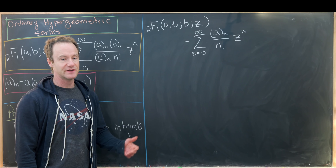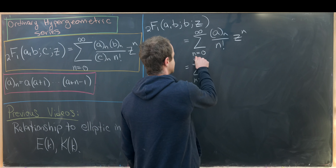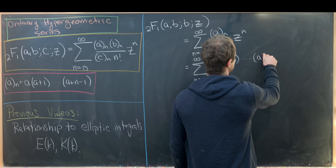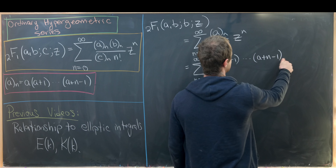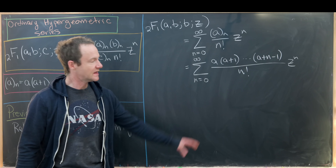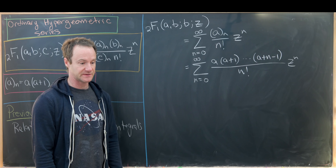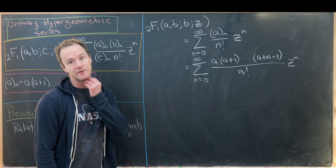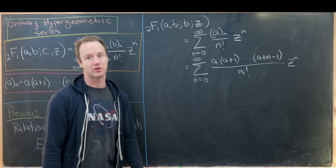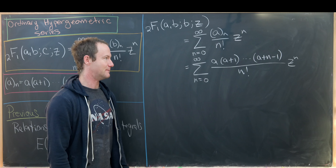This becomes the sum from n=0 to infinity of a times (a+1) all the way up to (a+n-1) over n! times z^n. Looking at this, it has almost the shape of a binomial coefficient — a binomial coefficient has a falling product, whereas this has a rising product.